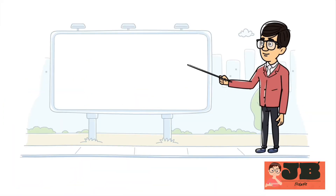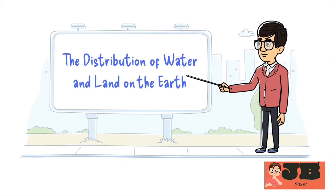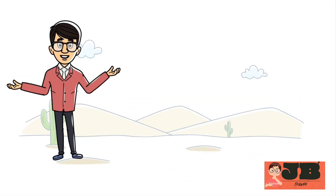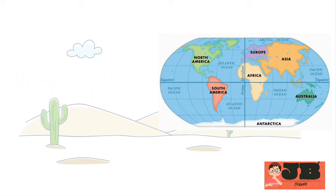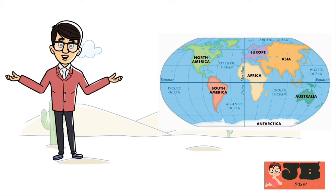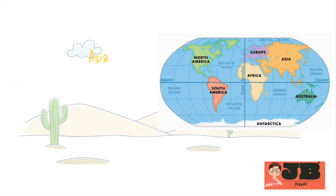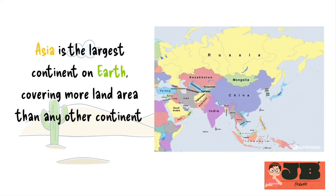Moving forward, let's understand the distribution of water and land on the Earth. The Earth's water and land are not evenly distributed between the Northern and Southern Hemispheres. The Northern Hemisphere has more land compared to water, whereas the Southern Hemisphere has more water than land. You can see on the globe that the continent with the most land in the Northern Hemisphere is Asia, which is the largest continent on Earth, covering more land area than any other continent. Asia has many large countries like China, Russia, and India, which add to its vast land area.